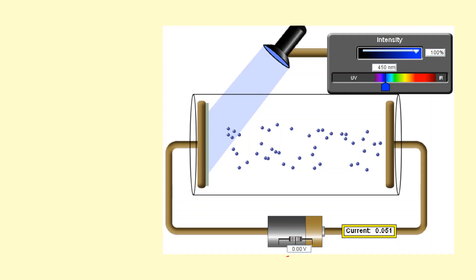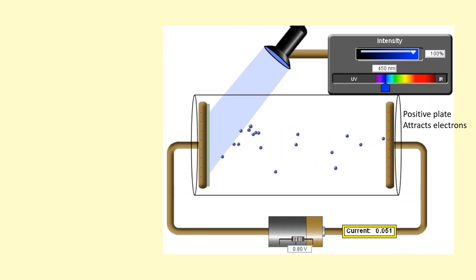Okay, so far we've been using this setup. We've been keeping the battery off. What I'm going to do now is use that battery to turn this plate positive. So when that becomes positive, it's going to start attracting the electrons towards it, speeding the electrons up towards the positive plate. However, the effect on the current is negligible. It barely increases.